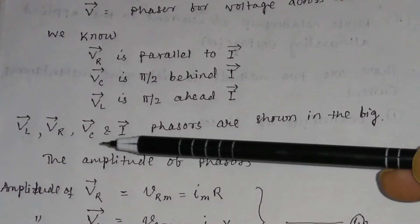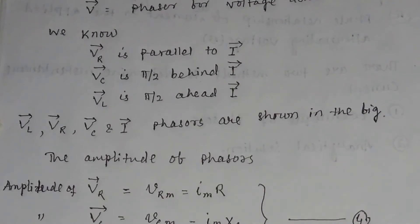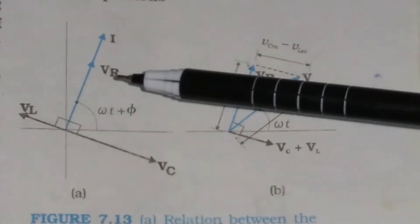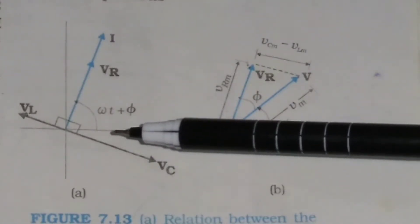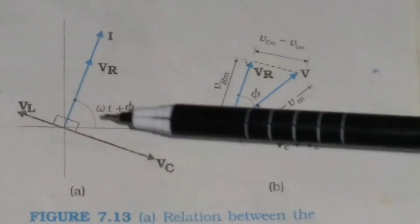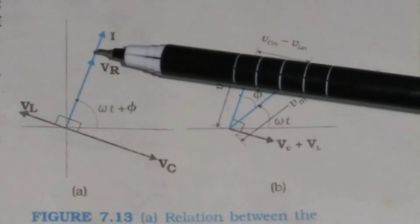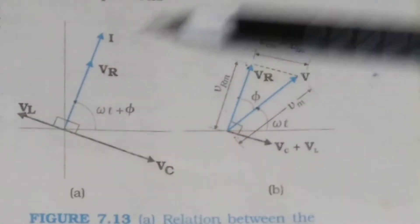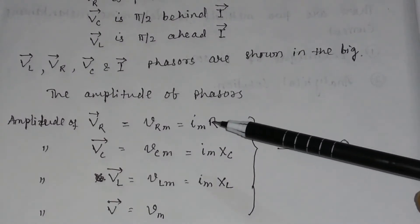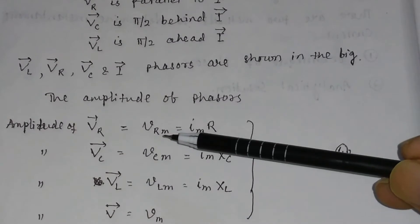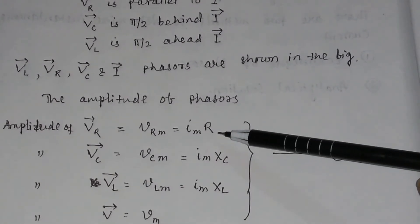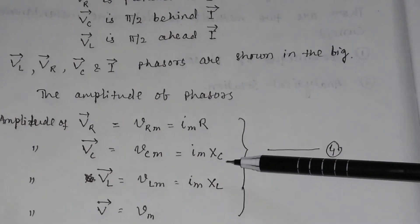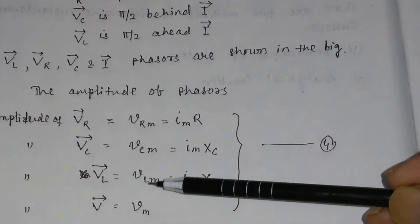Similarly, the voltage phasor in a purely inductive circuit is π/2 ahead of the current phasor. VL, VR, VC, and I phasors are shown in the figure. From the figure, it is clear that phasor I is parallel to phasor VR; VC is π/2 behind I, and VL is π/2 ahead of I. The amplitude of phasor VR is VRm = Im·R, the amplitude of phasor VCm = Im·Xc, and the amplitude of the source phasor is Vm.